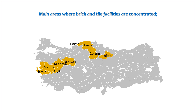3. Aegean region — Izmir and other cities also have concentrations of brick and tile facilities. Urbanization and infrastructure projects in this coastal region contribute to the demand for construction materials. 4. Mediterranean region — Antalya and other cities experience tourism-related construction, leading to a demand for building materials such as bricks and tiles. 5. Black Sea region — although less industrialized, there are brick and tile facilities in cities along the Black Sea coast, catering to local construction needs. 6. Southeastern Anatolia region — cities like Diyarbakır and Şanlıurfa also have brick and tile manufacturing facilities, driven by construction activities and infrastructure development. The distribution of brick and tile facilities is influenced by construction trends, infrastructure projects, and regional development initiatives.